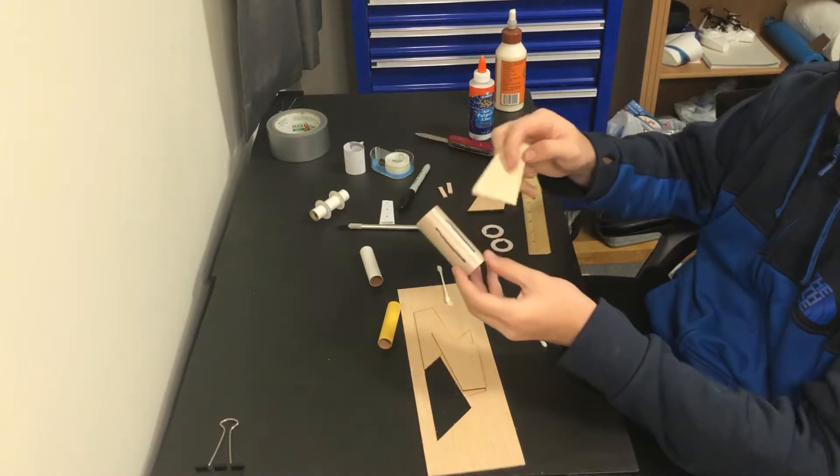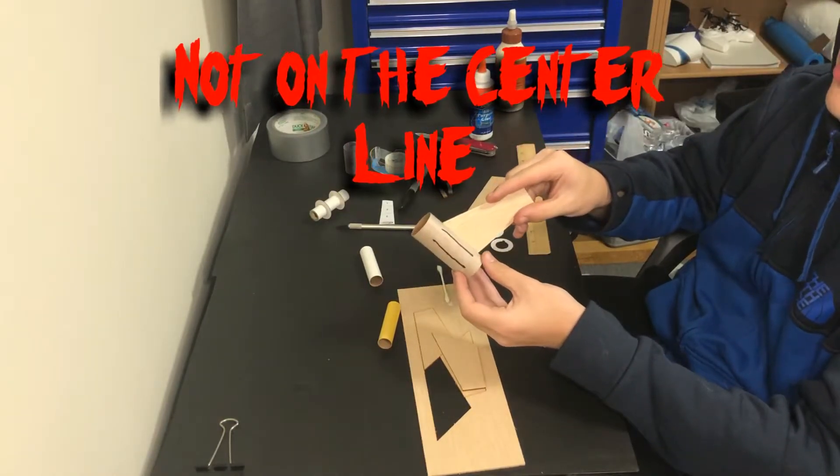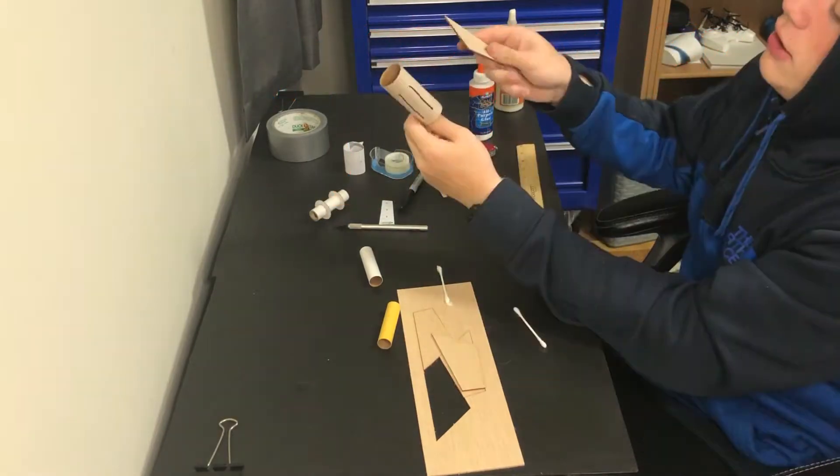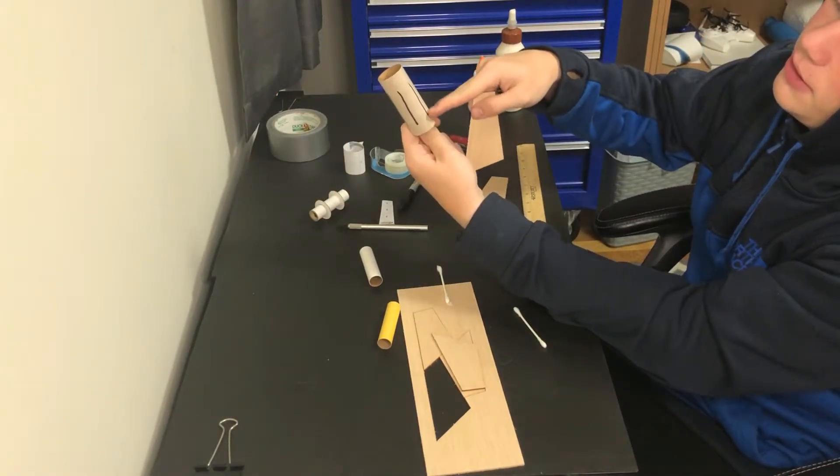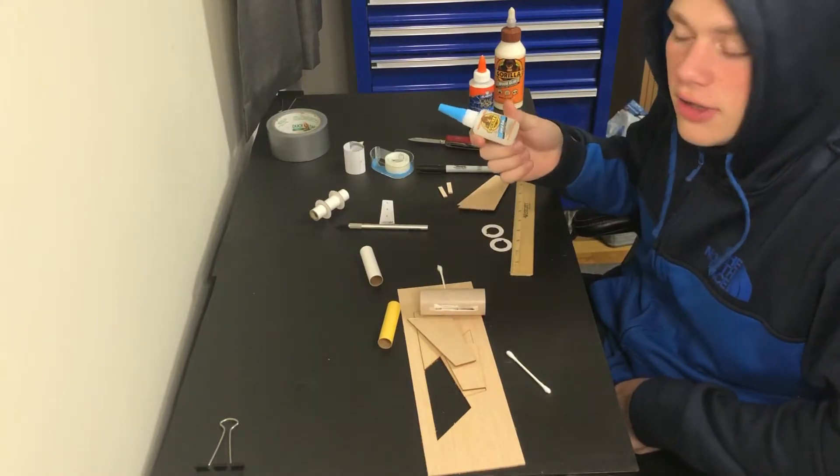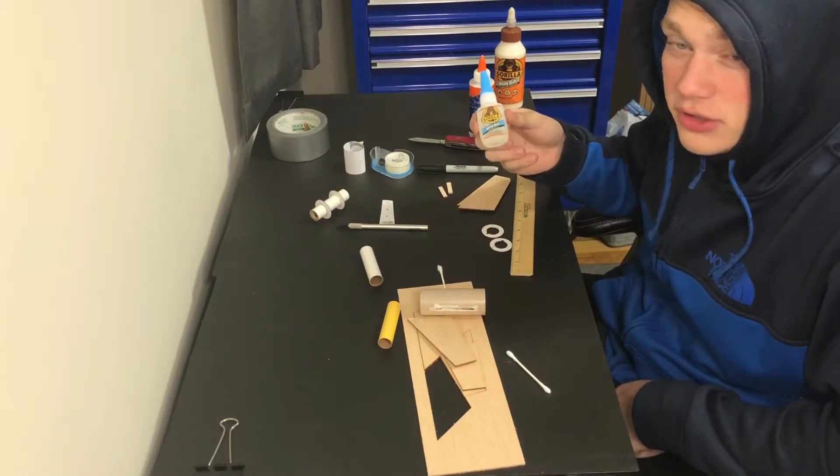And we're going to put these not on this line, but on all the other lines. You want them going like this, and you're going to have them five-eighths of an inch from the bottom. I'm going to use super glue because it takes a really long time for wood glue to dry.